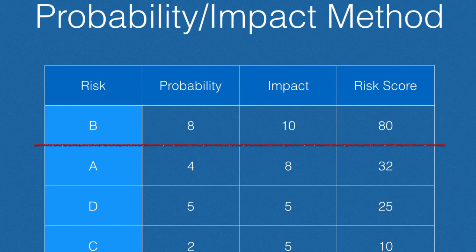Once I've done that, I'll define some sort of threshold. For example, using a scale of 1 to 10, I might set a threshold of 80 — every risk with a score of 80 or greater is one I'm going to invest time in developing a risk response plan for. How am I going to mitigate the threats? How am I going to enhance or exploit those opportunities? I would develop a risk response plan, a contingency plan, backup plans — whatever is appropriate for the risk at hand.